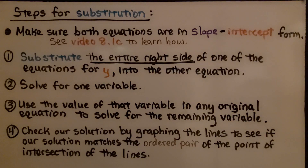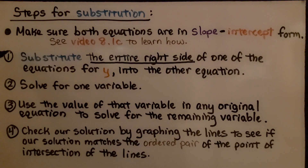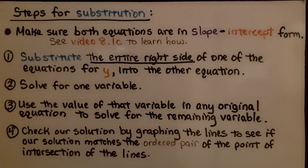This would be something good to put in your notes — these are the steps for substitution. First, make sure both equations are in slope-intercept form (see video 8.1c). Step one: substitute the entire right side of one equation for y into the other. Step two: solve for one variable. Step three: use that value in any original equation to solve for the remaining variable. Step four: check your solution by graphing the lines to see if your solution matches the point of intersection.